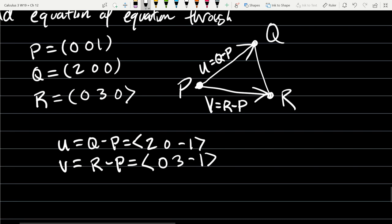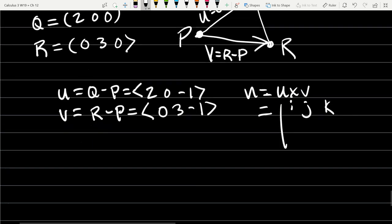We're going to cross these vectors. Always load the 3 by 3 I, J, K matrix up. Spanning across row I, J, K, row 1. U is 2, 0, negative 1, 0, 3, negative 1.